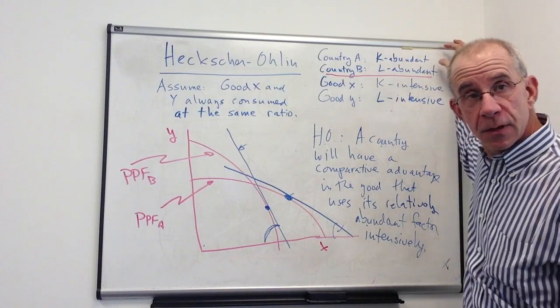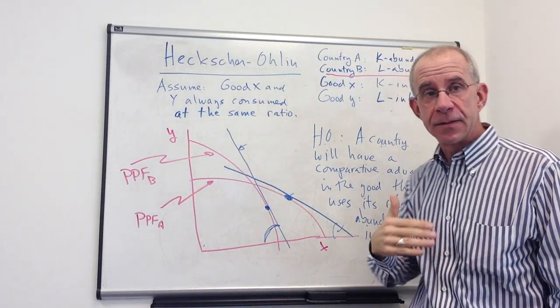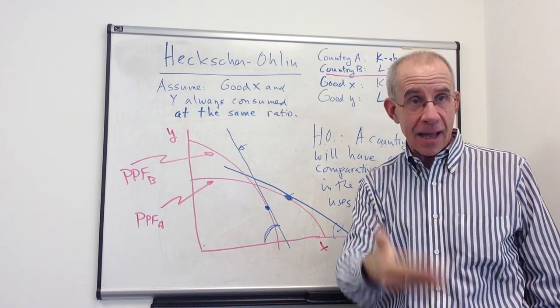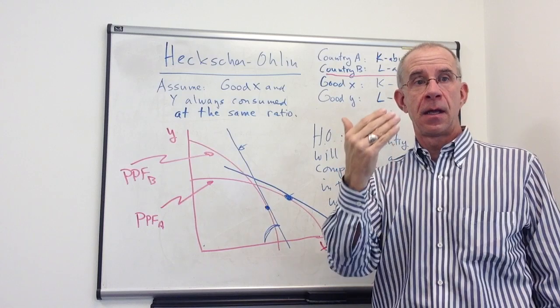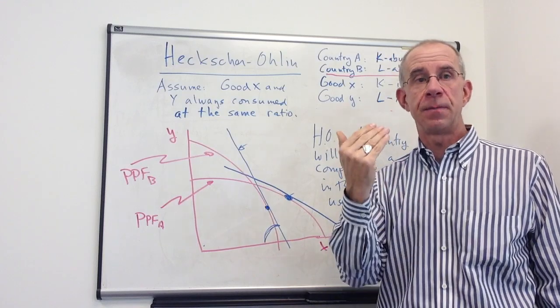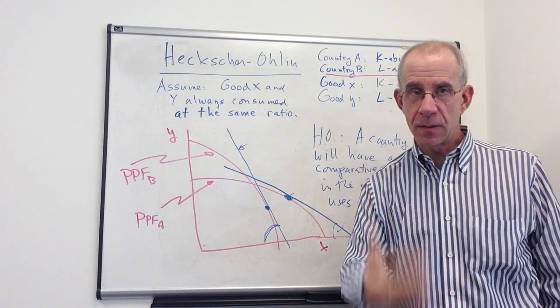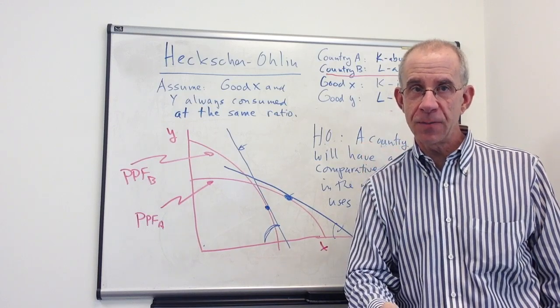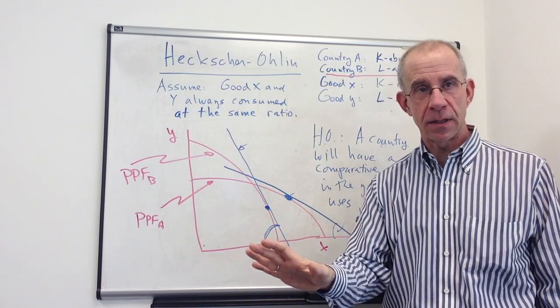The abundance of capital in country A means that the capital will be cheap in country A. Cheap capital means it's going to be cheap to produce the capital-intensive good. You can produce the capital-intensive good cheaply, you can sell it at a low price. That's Heckscher-Ohlin.